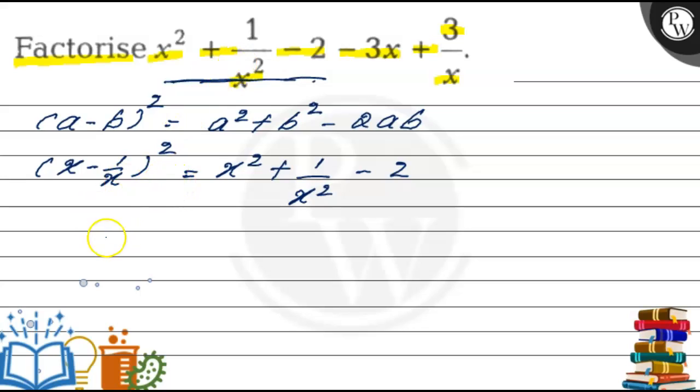Now this one becomes (x - 1/x)². Here if we take -3 common what we will get is (x - 1/x). In this expression what is common? Common term is (x - 1/x), then remaining is (x - 1/x) - 3.